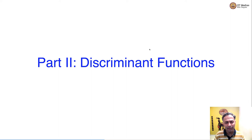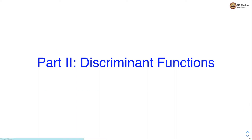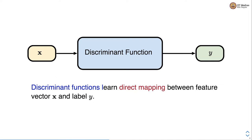Welcome to the next video of the machine learning techniques course. In this video we will discuss discriminant functions. Discriminant functions learn direct mapping between feature vector and label. Since all of you are familiar with the linear regression setup, discriminant functions basically extend that setup to classification. In this course we will restrict our discussion to linear discriminant functions.